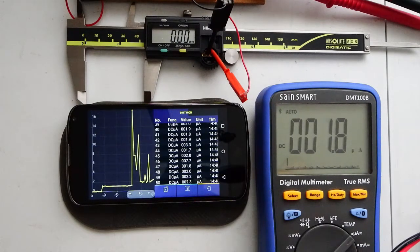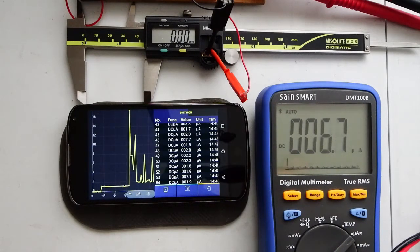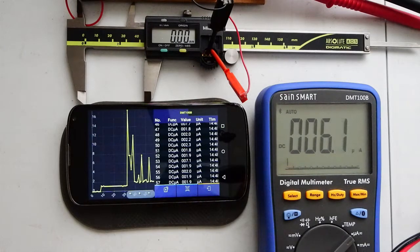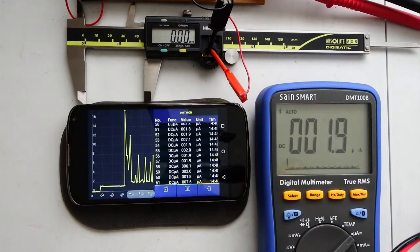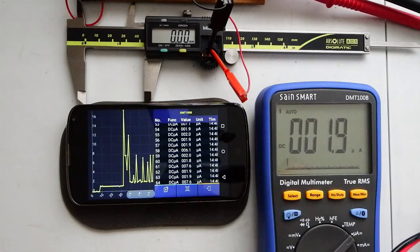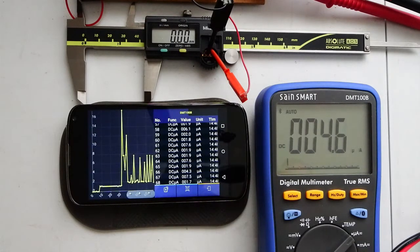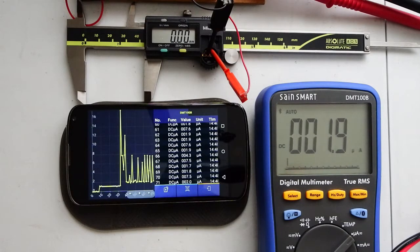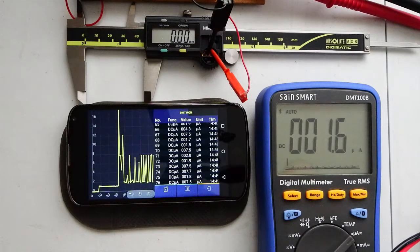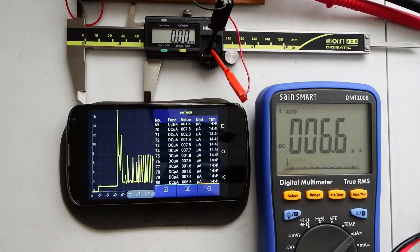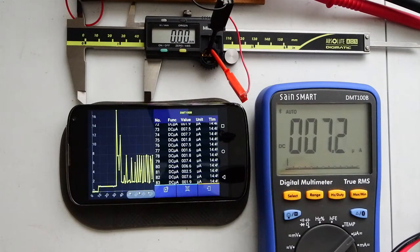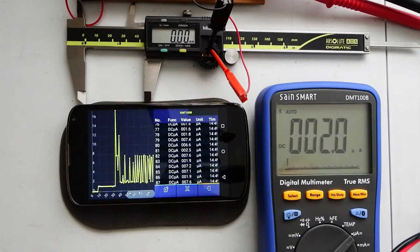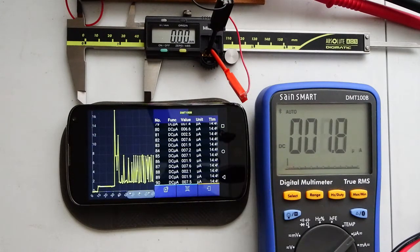So when those calipers are first switched on, they start to draw a current and that current tends to fluctuate between maybe 1 or 2 microamps and about 7 or 8 microamps. So that electronics in the caliper is doing what it needs to do to measure where it is and display the measurement.